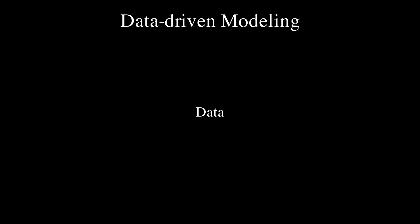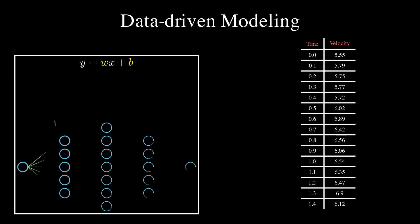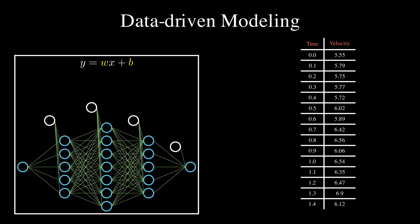For data-driven modeling you need data and a predefined model that will be tuned as per the collected data. There are several choices in a modern modeling toolbox, from something as simple as a linear model with just two parameters to a deep neural net with hundreds, thousands, or even millions of parameters. Which one to pick depends on the data set and the computational resources at hand.